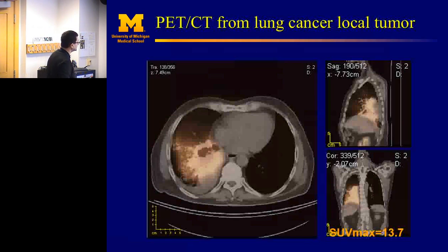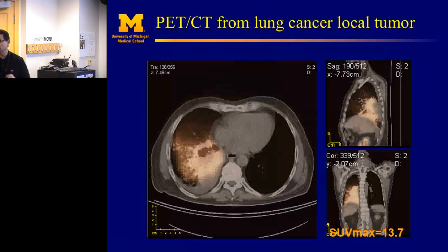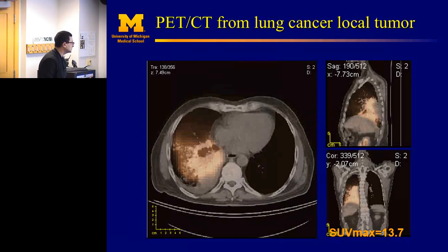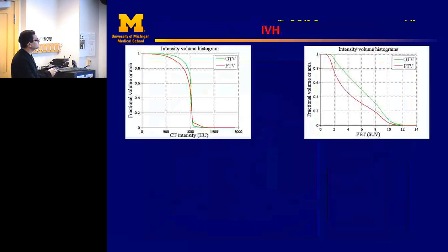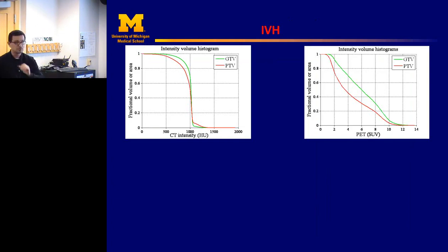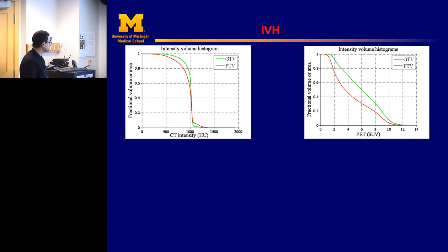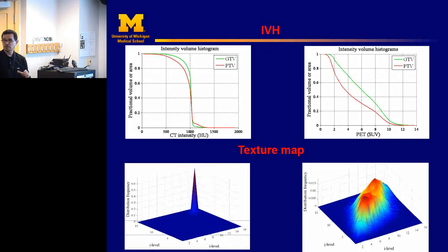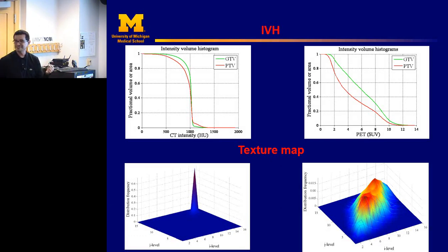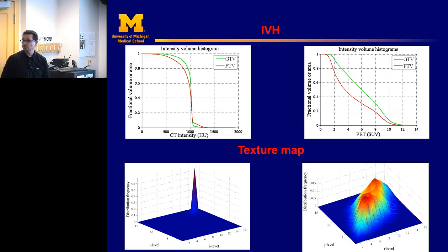This is a PET-CT image in lung cancer — the CT image and the PET, where the PET glows. It gives good localization, but it is a blurry image with poor spatial resolution. We can extract features like intensity-volume histograms — how much intensity per cubic centimeter. In CT, you use Hounsfield units; in PET, you use standard uptake value to normalize these images. Textures tell you about heterogeneity. PET shows more heterogeneity than CT, as expected — PET is a functional image while CT is anatomical. The more the distribution is spread, the more heterogeneous the image is.